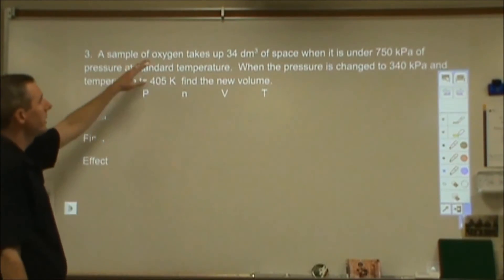Let's take a look at one more that's perhaps a little more challenging. Here I have oxygen takes up 34 decimeters cubed. Maybe you don't even know what that is. But hopefully you know enough to know that that's going to be your volume. 34 decimeters cubed. It doesn't matter what the units are as long as they stay constant. 750 kilopascals at standard temperature. Standard temperature for gas laws is zero degrees Celsius and I need that to be in kelvins. So I'm going to do 273 kelvin. There are my initial conditions. Three things.